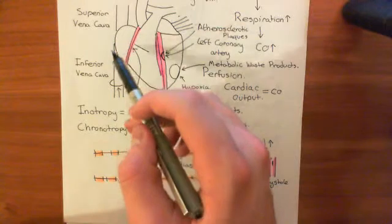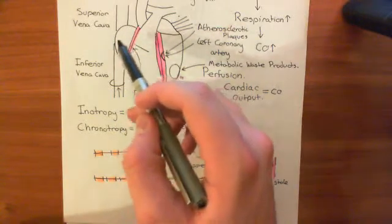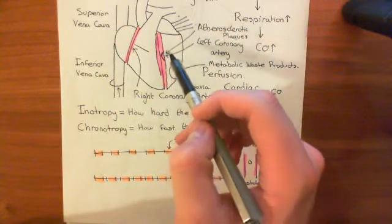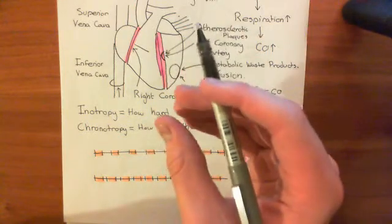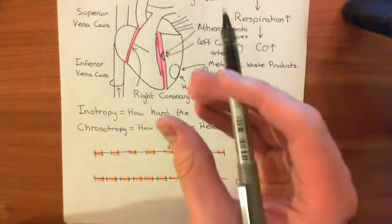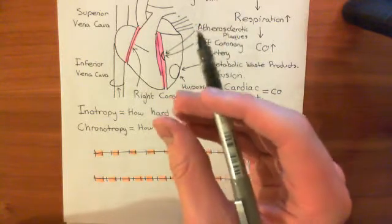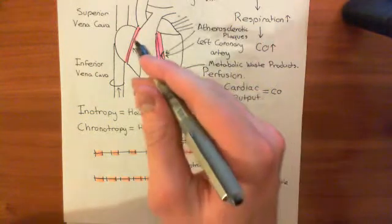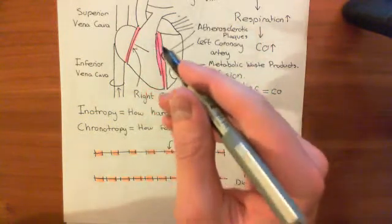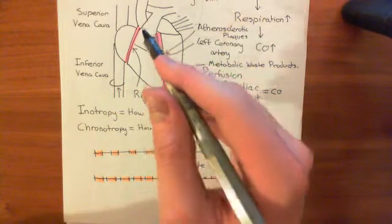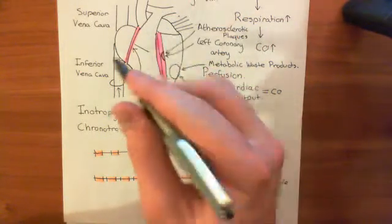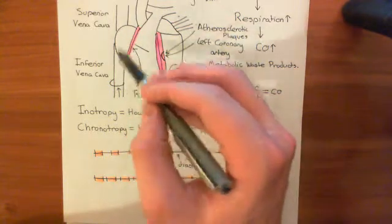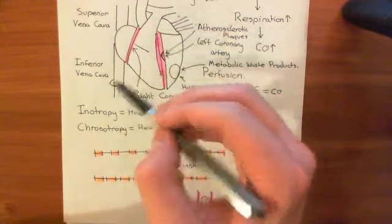So you get less blood in the heart now when it contracts. And what that means is that the heart is having to contract on a smaller volume of blood. And if you imagine contracting on a smaller volume of blood, that's going to take less force. So the amount of work the heart has to do to expel the blood from the heart actually is reduced because the volume of blood that's in the heart is going to be reduced because mean venous pressure has gone down.